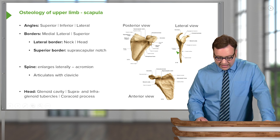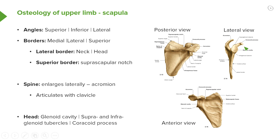The final feature is the coracoid process, an important bony projection arising from the superior border and head of the scapula. It helps form muscle attachments — we'll discuss coracobrachialis in a few slides. The coracoid process is visible here on the lateral view and again on the anterior view.